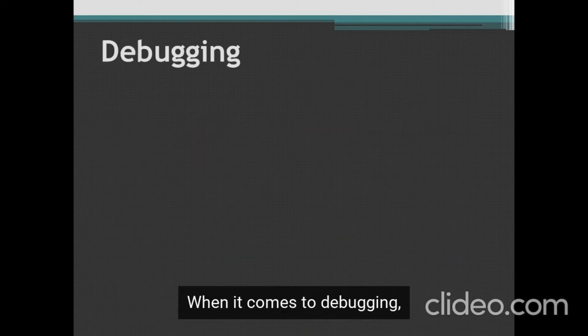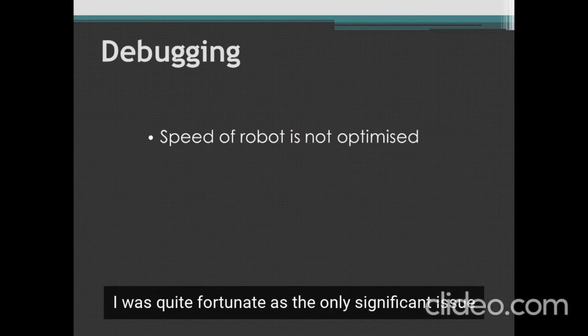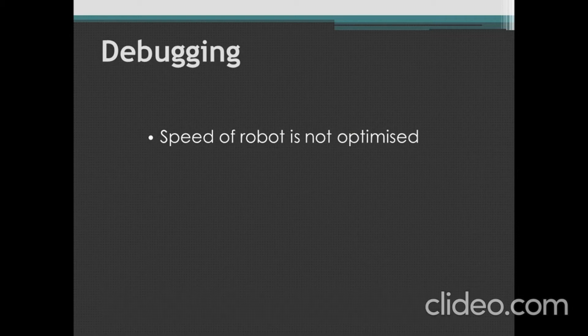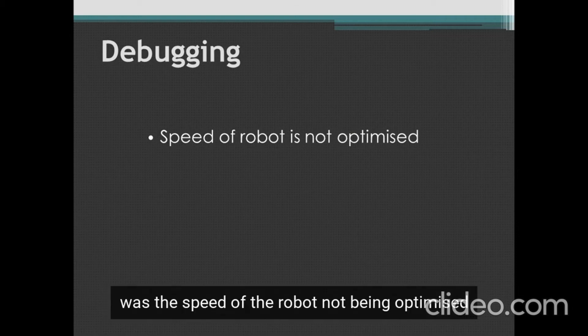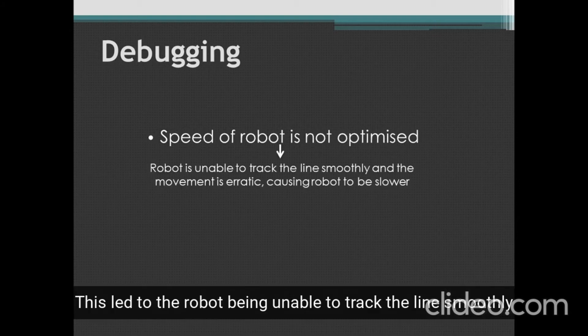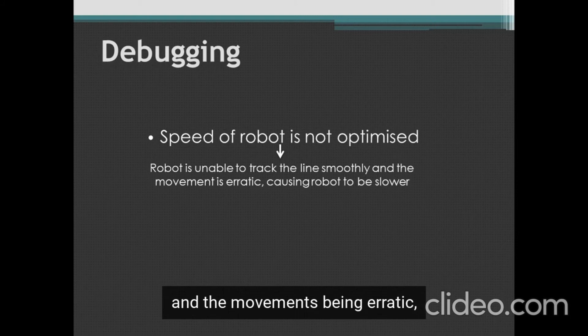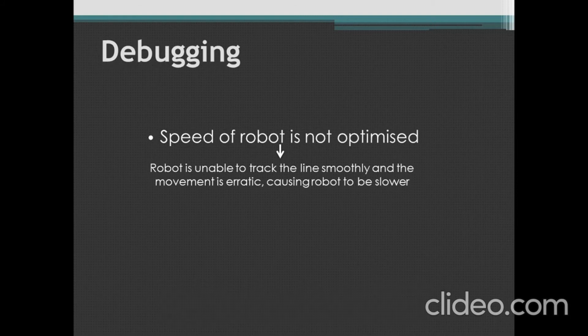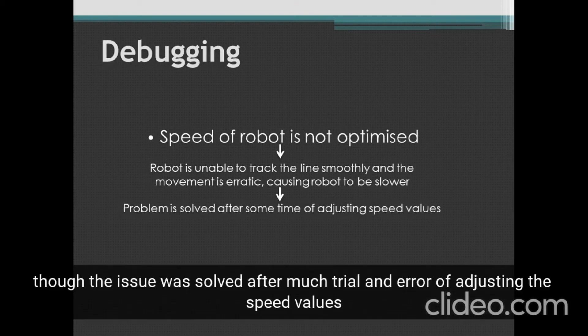When it comes to debugging, I was quite fortunate, as the only significant issue was the speed of the robot not being optimised. This led to the robot being unable to track the lines and the movements being erratic, resulting in slower overall speed. The issue was solved after much trial and error of adjusting the speed values.